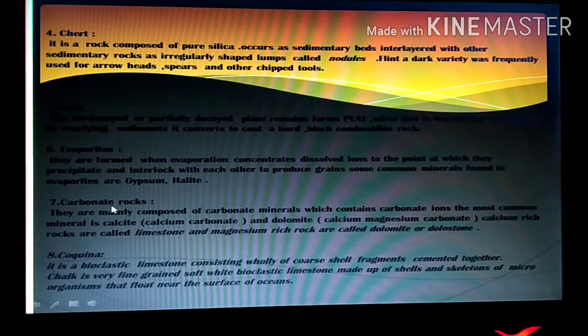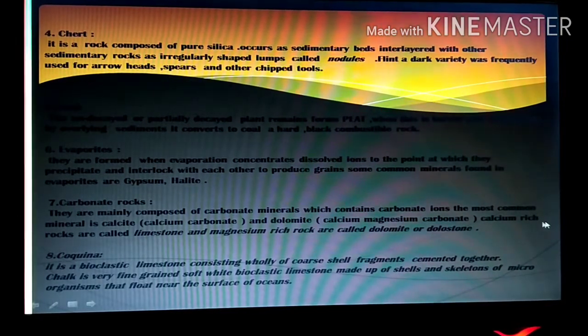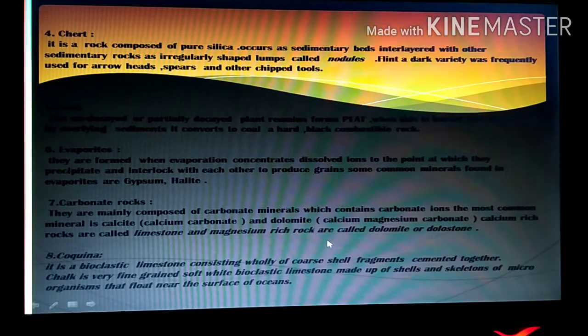Then we have carbonate rocks. They are mainly composed of carbonate minerals which contains carbonate ions. The most common mineral is calcite which is calcium carbonate and dolomite. Dolomite is calcium magnesium carbonate. Calcium rich rocks are called limestone and magnesium rich rocks are called dolomite or dolostone.